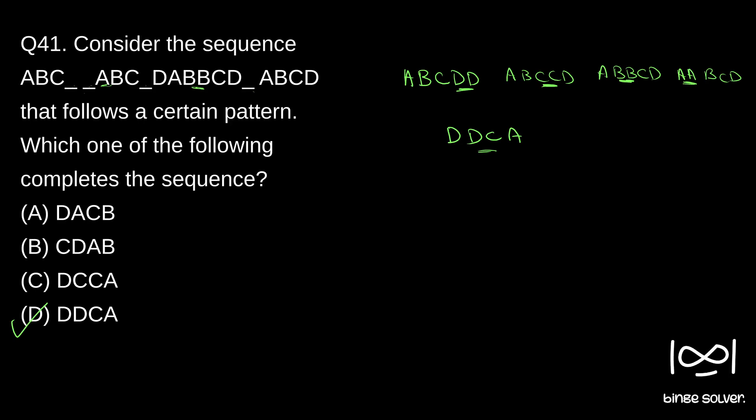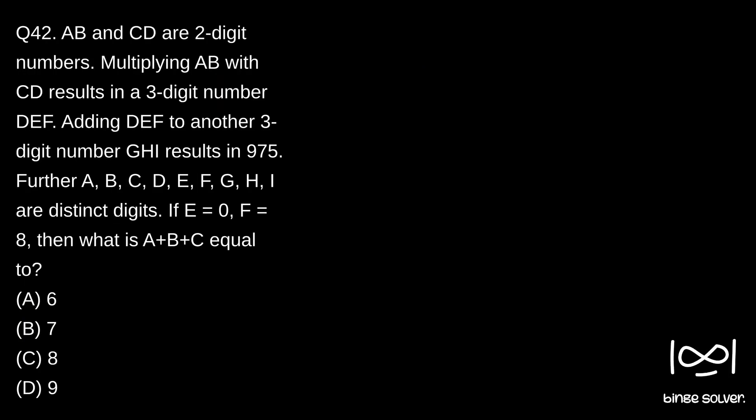Next question, question 42. A, B and C, D are two-digit numbers. Multiplying A, B with C, D results in a three-digit number D, E, F. Adding D, E, F to another three-digit number G, H, I results in 9, 7, 5. Further, A, B, C, D, E, F, G, H, I are distinct digits. If E is equal to 0 and F equal to 8, then what is A plus B plus C equal to?